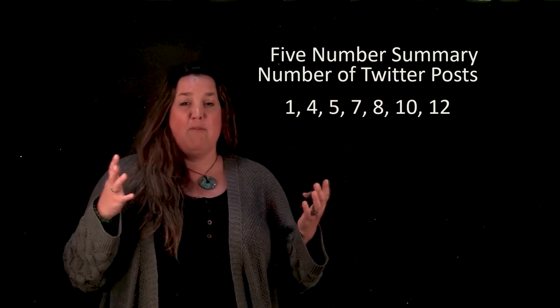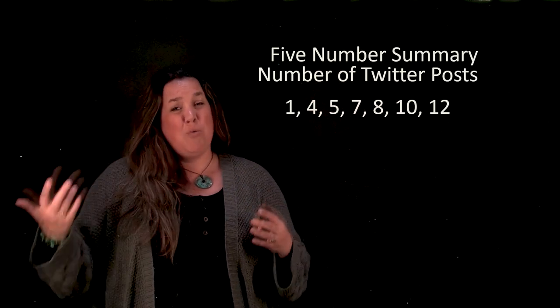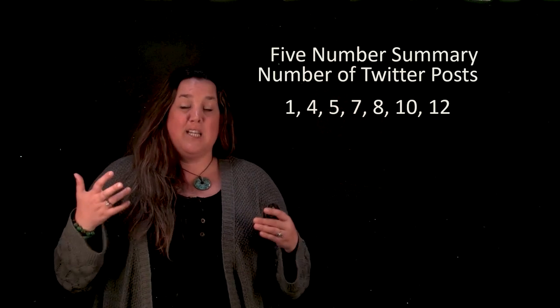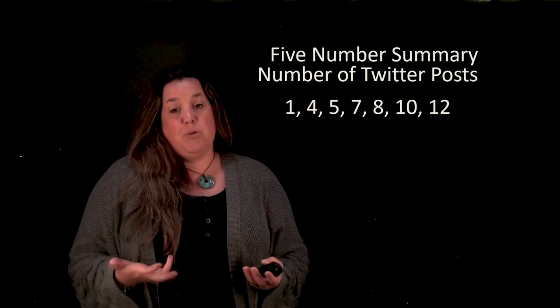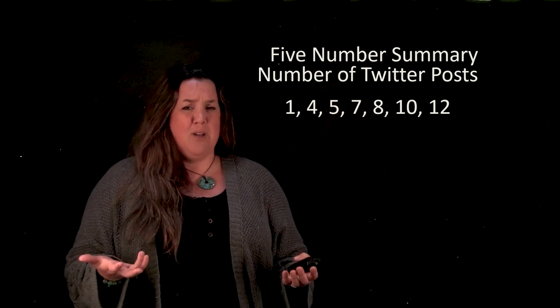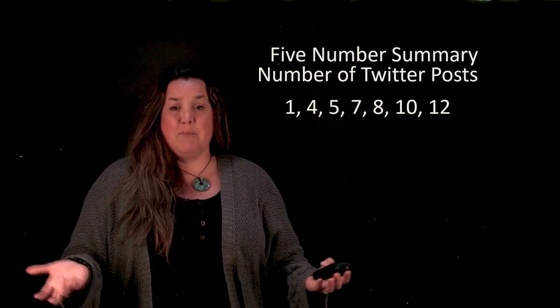And this is important because when you talk about values in the five-number summary really you would be describing them as less than, greater than, or in between. And to do that you really have to have the numbers in order otherwise those types of comments won't make any sense.